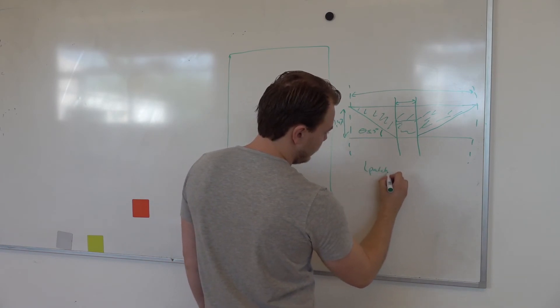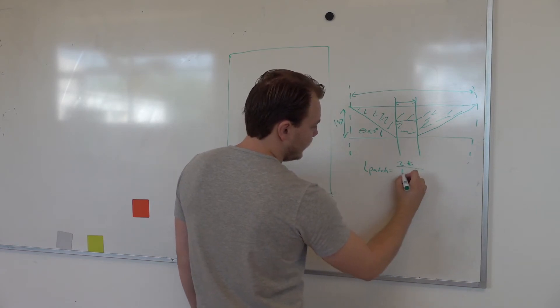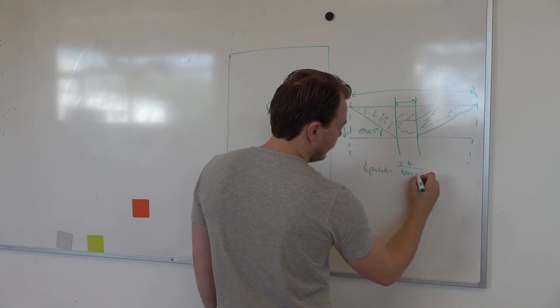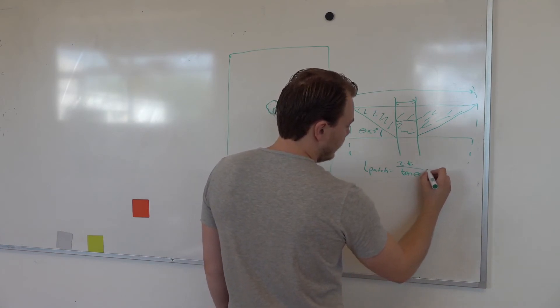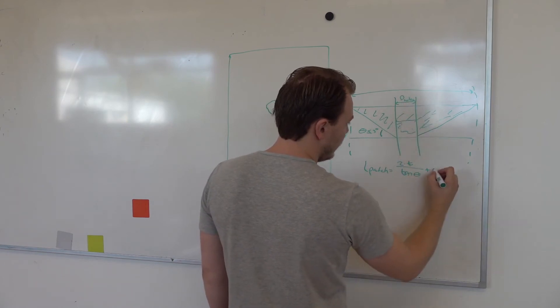With the following rule: the length of the patch is two times the thickness divided by the tangent of theta, adding the diameter of the hole that's over there.